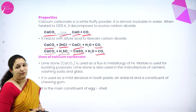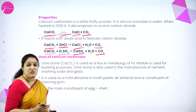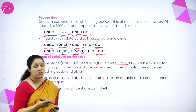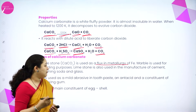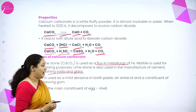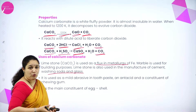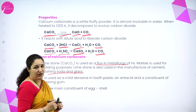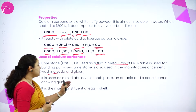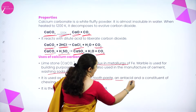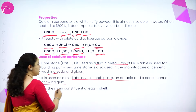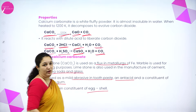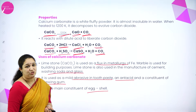Uses of calcium carbonate: it is used as a flux in metallurgy, where it reacts with impurities to form slag. It is used in manufacture of cement, washing soda, glass, marble flooring, toothpaste as an abrasive, antacids, chewing gum, and it is also present in eggshell.